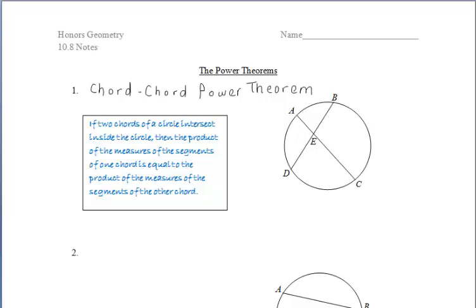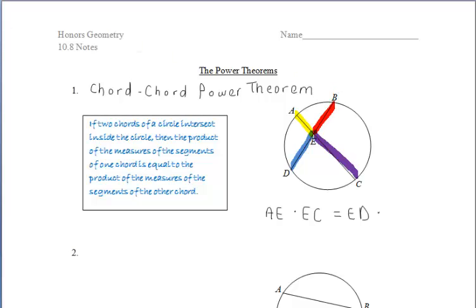Let's apply it to the diagram at the right. We can say that segment AE times segment EC must equal segment BD times segment EB. We took it chord by chord. Notice: yellow times purple equals blue times red. You can also do purple times yellow equals red times blue, as long as you're keeping with the same chord each time.